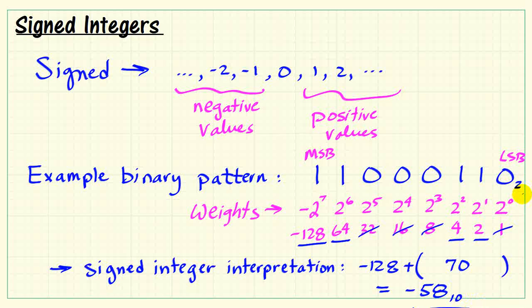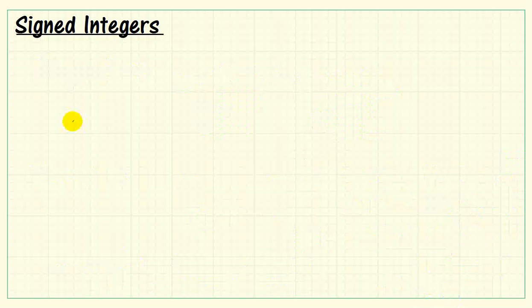Again, we get a completely different value if we were to interpret that as an unsigned integer. That is, we wouldn't simply have positive 58.